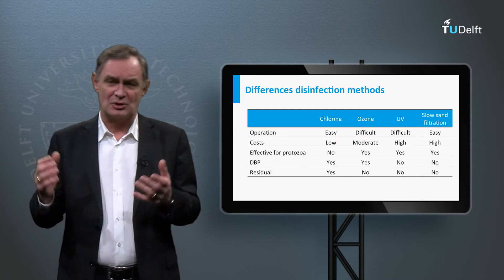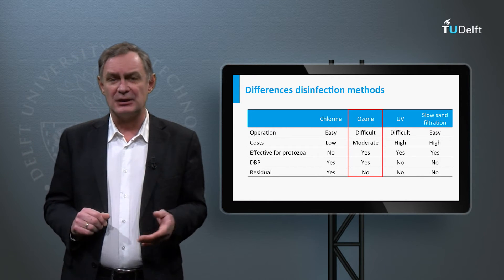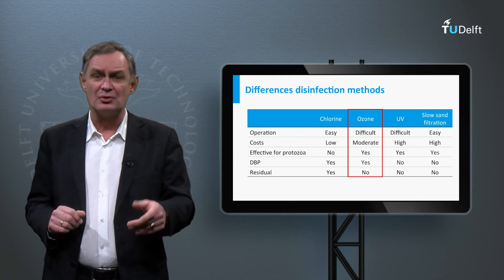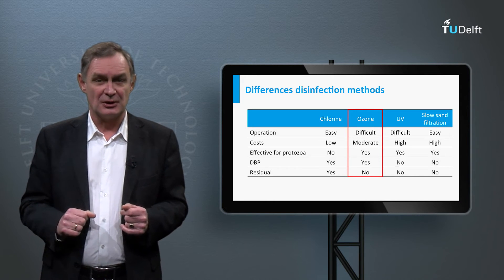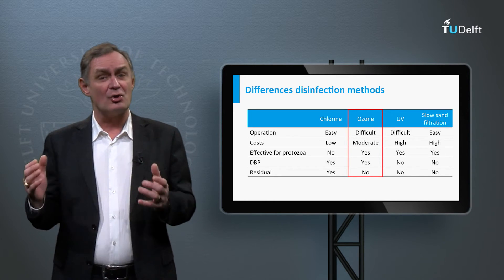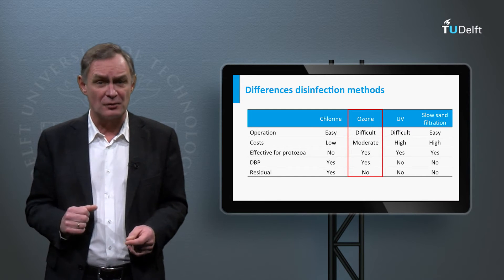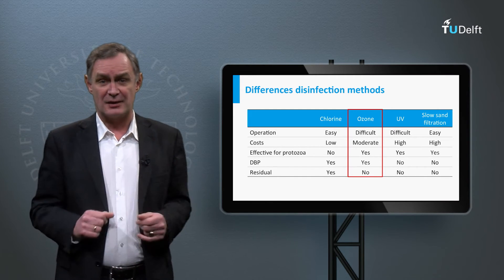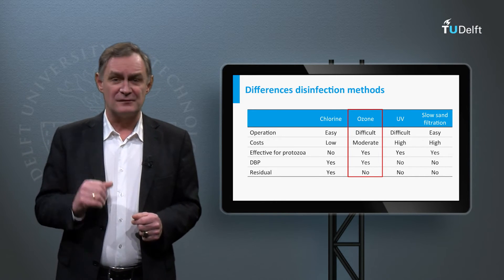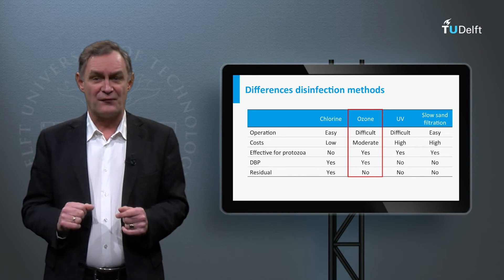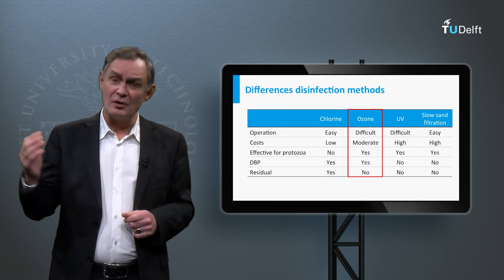Ozone is generated from oxygen present in air or in pure oxygen gas. Due to its instability, ozone should be generated in situ and requires a high level of maintenance and operational skills. The initial investment costs for equipment are also relatively high. Ozone is more effective than chlorine for inactivation of protozoa and short contact times are required. However, when bromide is present in the water, the disinfection by-product bromate is formed, and ozone doesn't maintain a residual level in the distribution system.